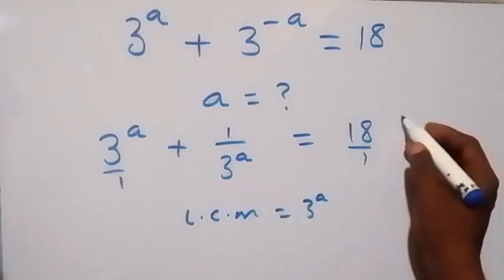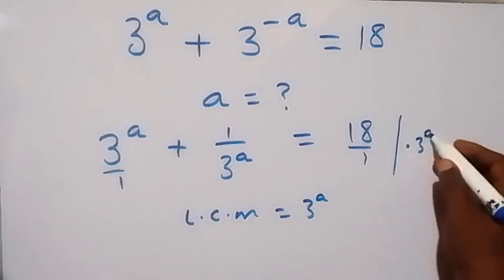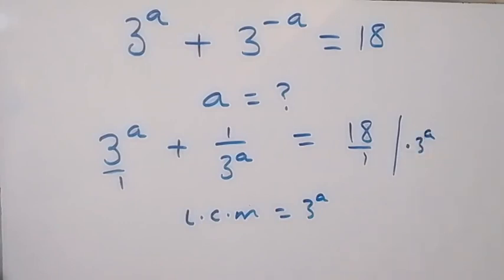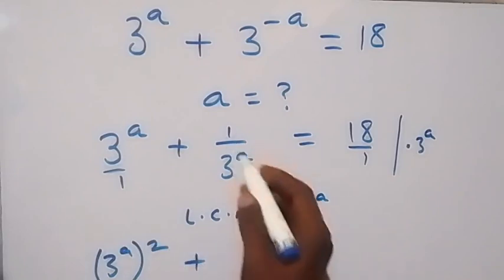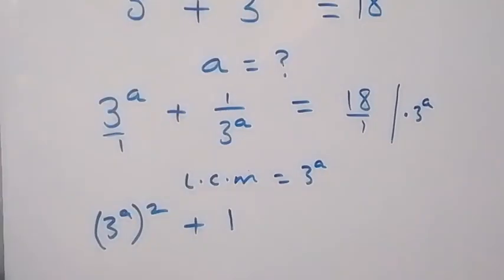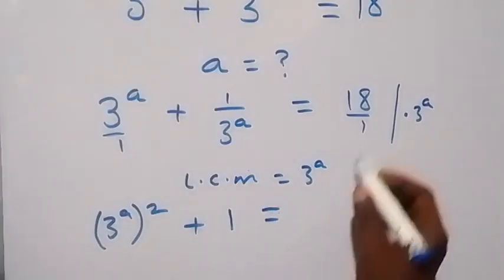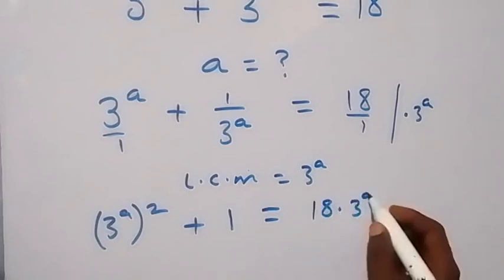So we can multiply through this equation by the LCM, which is 3 raised to power a. When 3 raised to power a multiplies the first term, it gives 3 raised to power a squared. And 3 raised to power a multiplied by the second term cancels to give 1, so we get: 3 raised to power a squared, plus 1, equals 18 times 3 raised to power a.